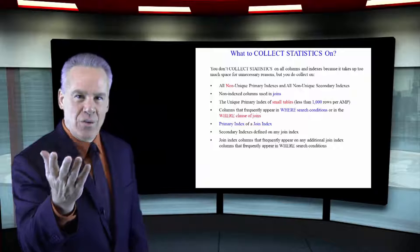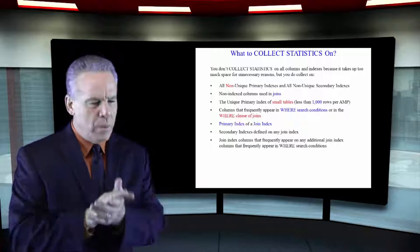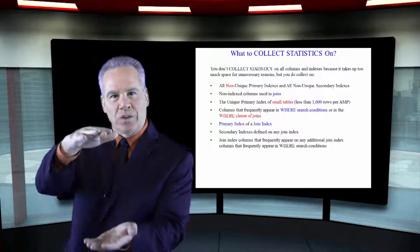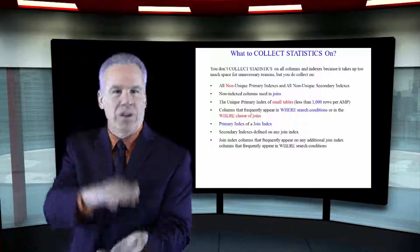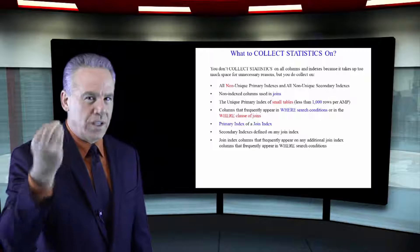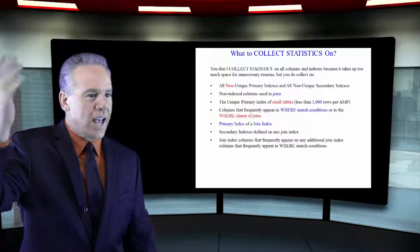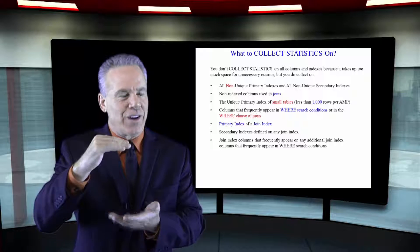In a non-unique primary index or secondary index like last name, we want to know how many Smiths we have versus Wilsons versus Patels versus Chins. So that's important that you get more statistics to the parsing engine so it can determine when using an index how many rows it thinks are coming back.